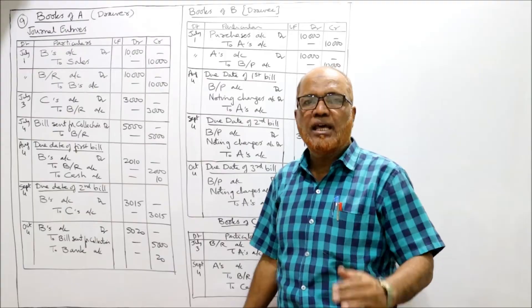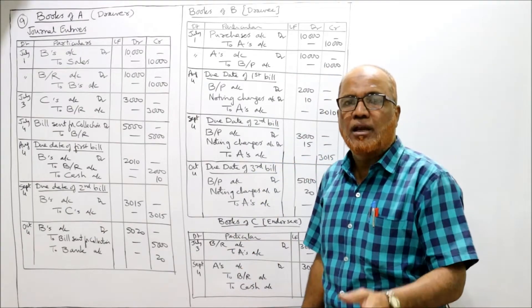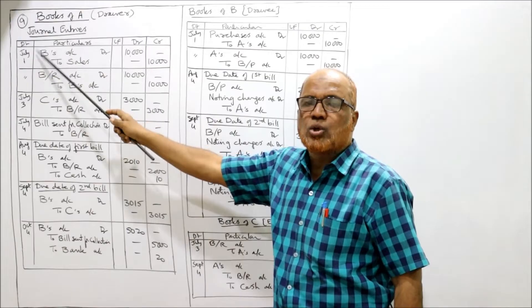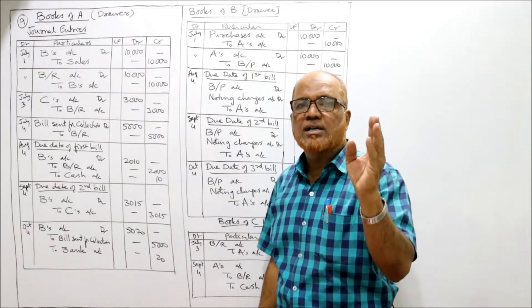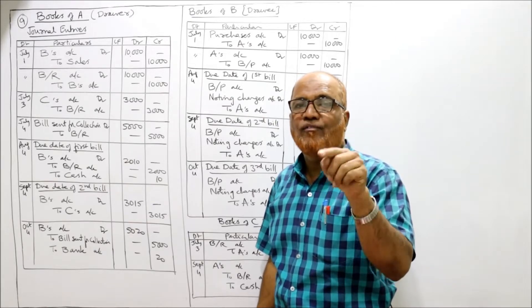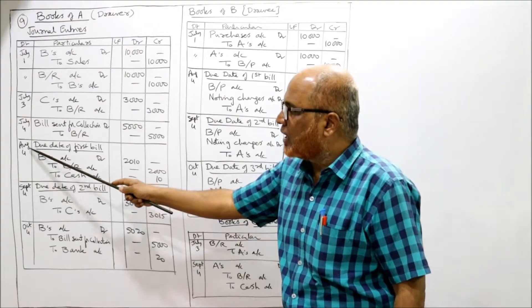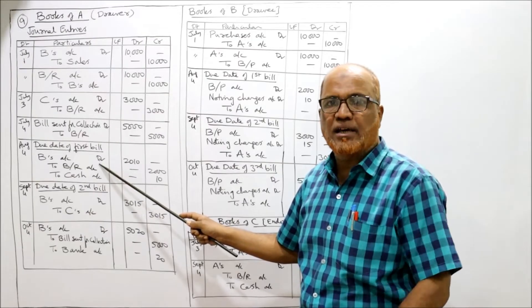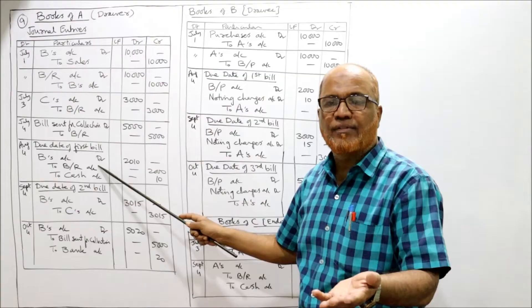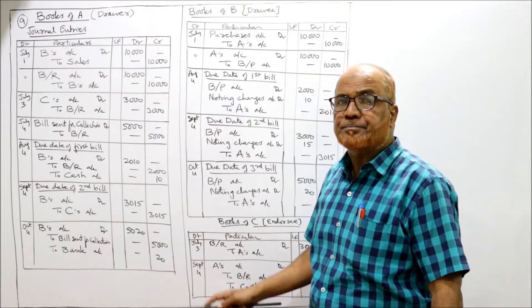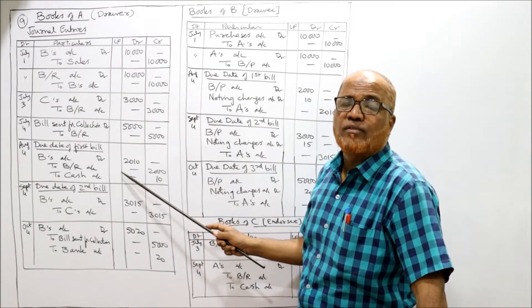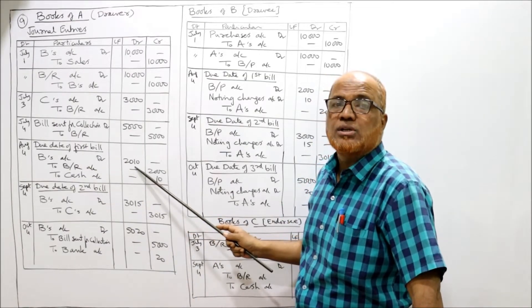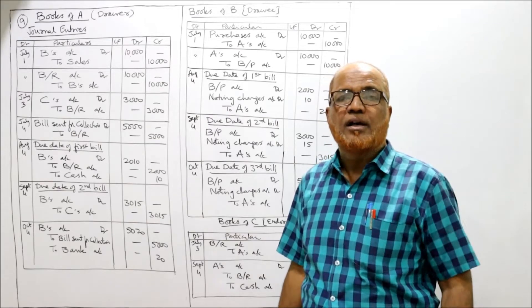On the due date: the first bill was drawn on July 1st for one month, so adding three grace days, August 4th is the due date of the first bill. The first bill was dishonored. A has kept the first bill with himself. Since the bill is dishonored, entry will be B's account debit 2,010 — the bill value is 2,000 and noting charges are 10 rupees.